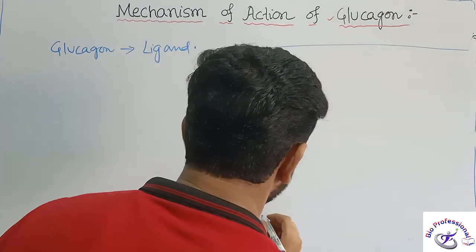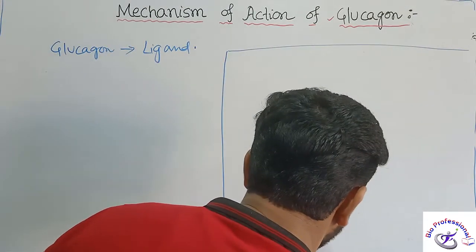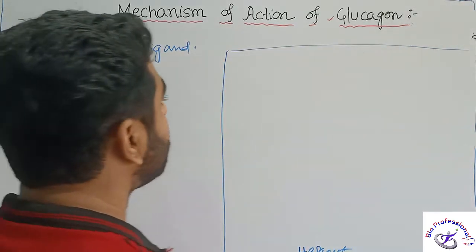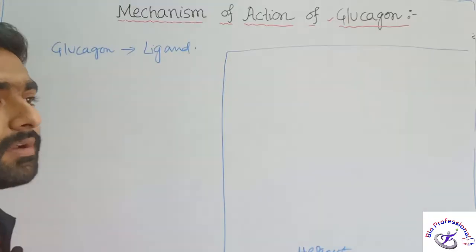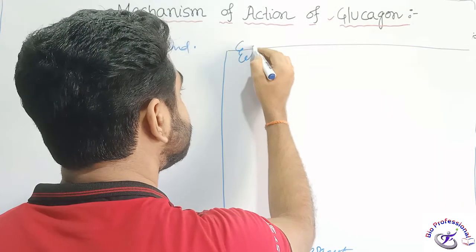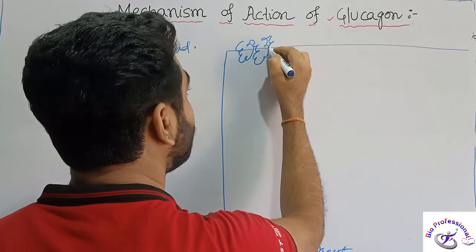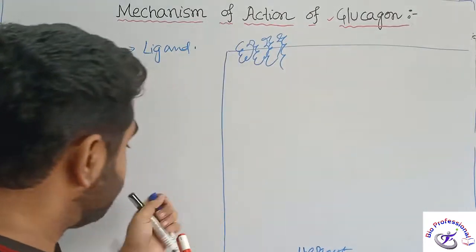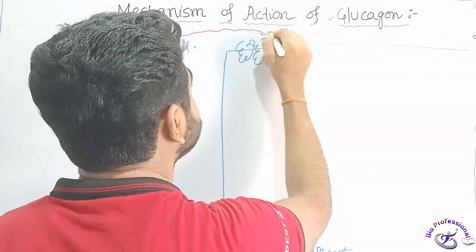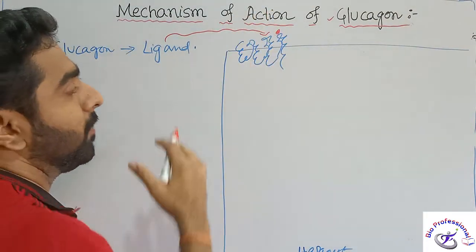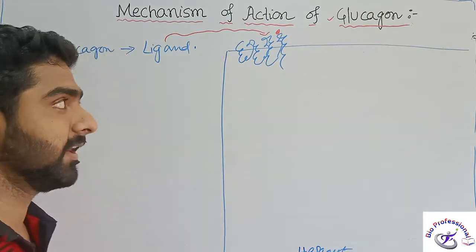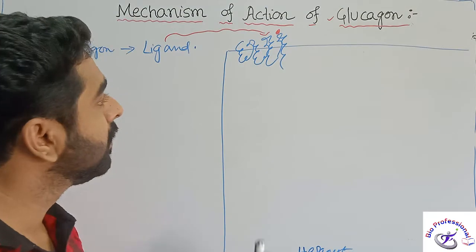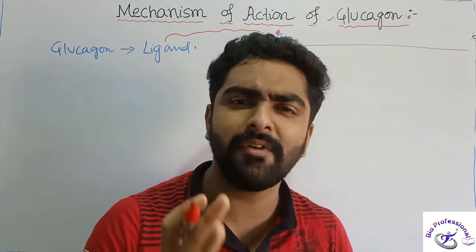Let's take the case of a hepatocyte — a liver cell. The hepatocyte has a receptor for glucagon. The receptor is basically a GPCR. Glucagon comes and binds to this GPCR's extracellular domain — the ligand binding site — forming the ligand-receptor complex.